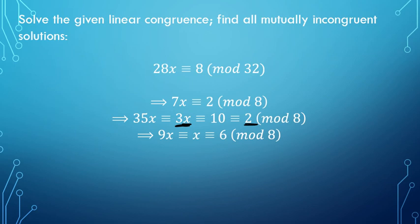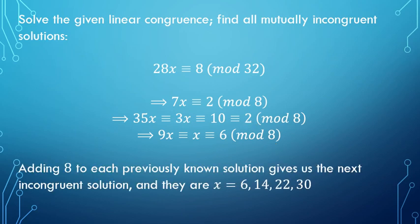Well, again, this is only one of our four mutually incongruent solutions to the given linear congruence up here. What I need to do to find the other number 3 is take this 8 that's here, add that onto my previously known solution to get my next mutually incongruent solution. So 6 plus 8 is 14. There's my second one. Add another 8 that gives me 22 is my third mutually incongruent solution. And then my fourth one, add the 8 onto 22 to give me 30. So 6, 14, 22, and 30 are my four mutually incongruent solutions to this given problem.